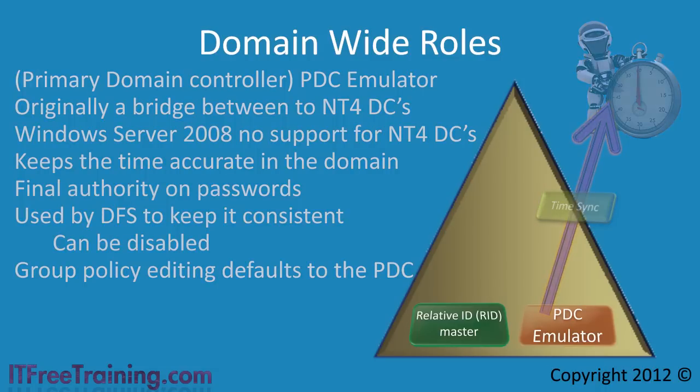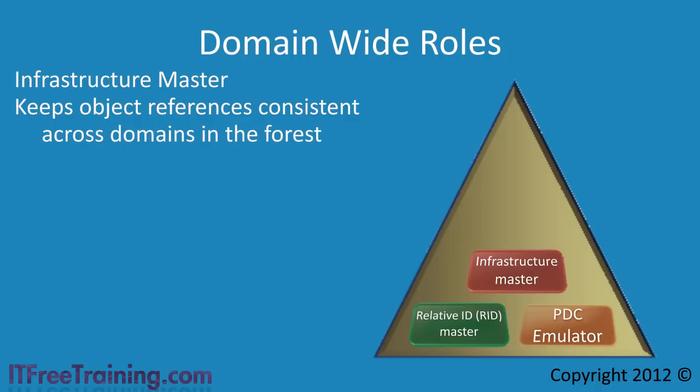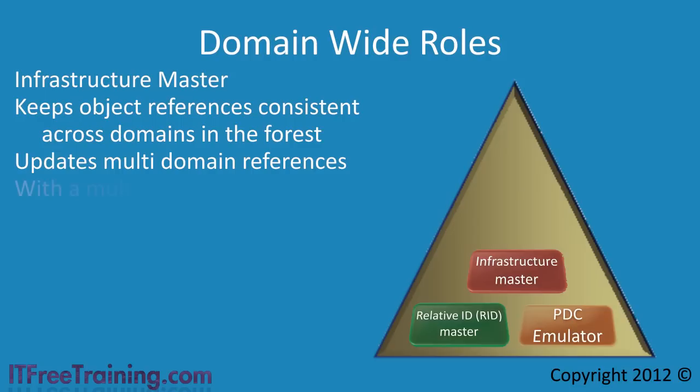The last of the 5 roles is the infrastructure master role. This role is important for keeping changes in object references consistent across domains. It does things such as track object moves, renames, and deletes across domains. It also updates multi-domain references in Active Directory when changes occur. If you are using a single forest with a single domain, the following does not apply.